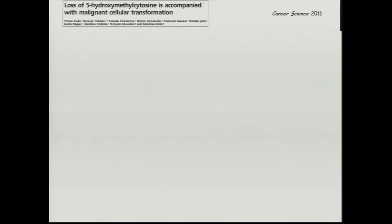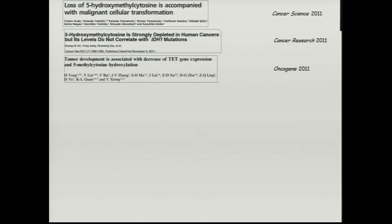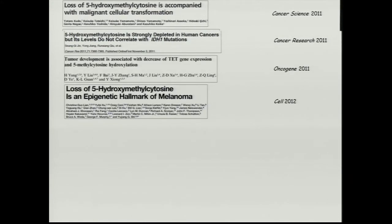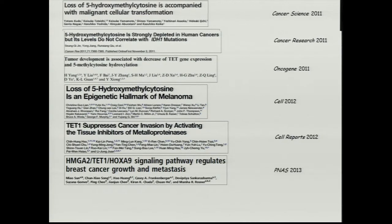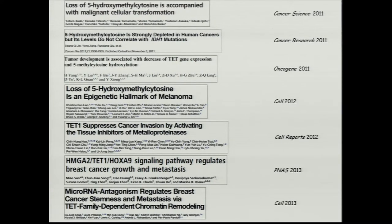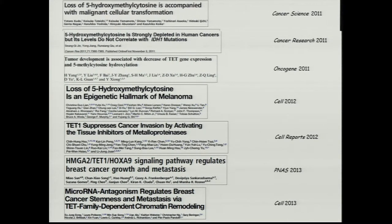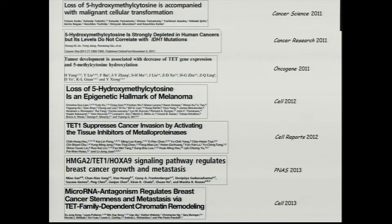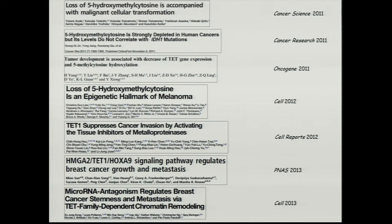Since then, there have been many papers relating all sorts of cancers, including solid cancers, to mutations in TET1 and TET2, or to loss of hydroxymethylcytosine, which is a readout for all TET activity. The question for us was whether we could induce an acute cancer of different cell types in a model organism by acutely deleting TET proteins, and this in fact turned out to be true.